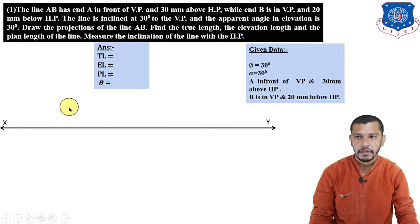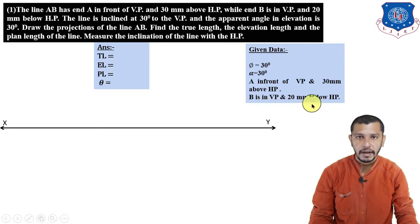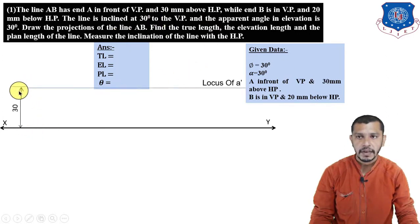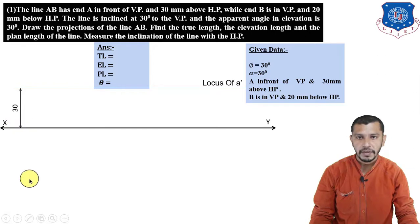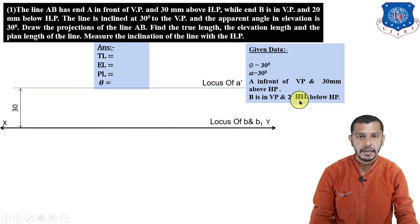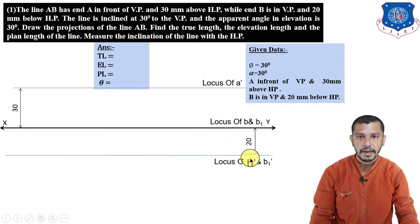Start by drawing the XY reference line. We have incomplete data for each point, so we won't mark the plan and elevation of any point directly — instead we will draw the locus for each point. A is in front of VP and 30 mm above HP, so 30 mm above the XY reference line we get the locus of A'. The distance in front of VP is not given, so the locus of the plan of A is below XY but its position isn't fixed yet. B is in VP, so the XY line itself is the locus of B and B1. B is 20 mm below HP, so 20 mm below the XY reference line we get B' and B1'.